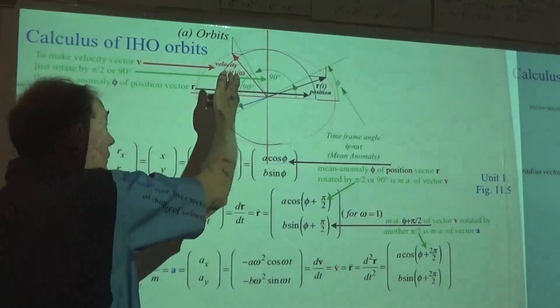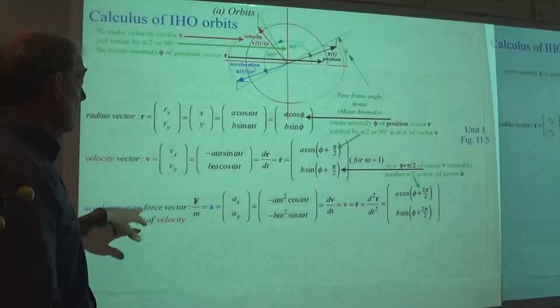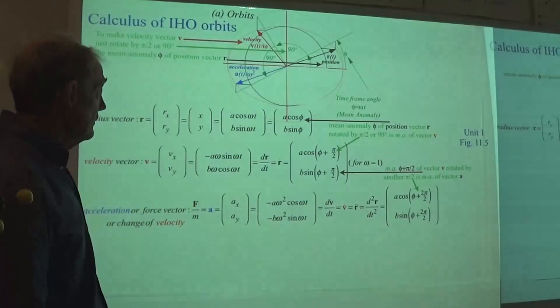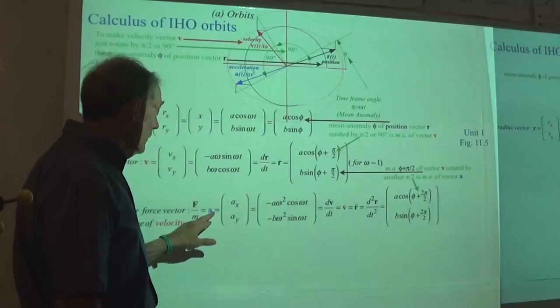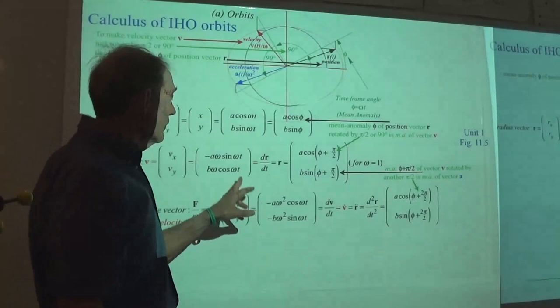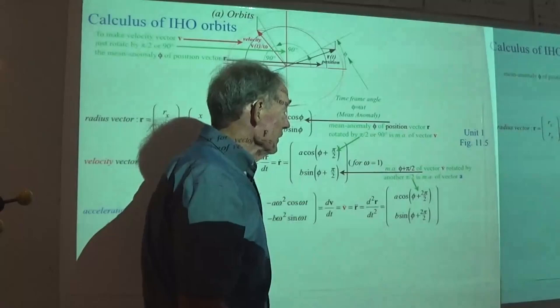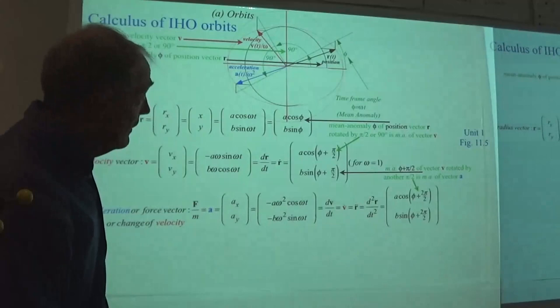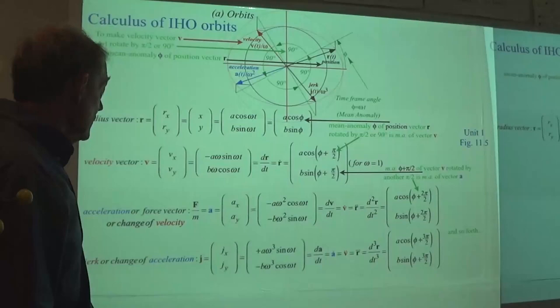Then we go one more step: the change in velocity is acceleration, and this is where Newton's second law shows up — F equals ma. The force divided by mass is what we're writing for the acceleration factor, again with omega equal to 1 radian per second. The second derivative picks up an extra factor of omega squared. There's one more step, and then we're done with the harmonic oscillator — and that's acceleration, and then the jerk.